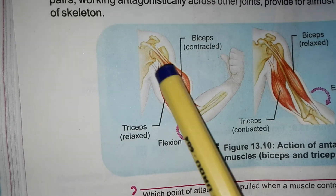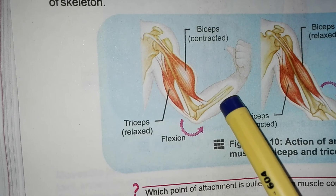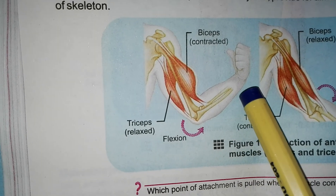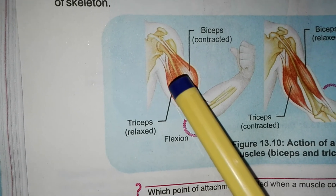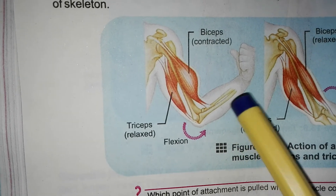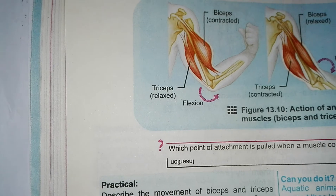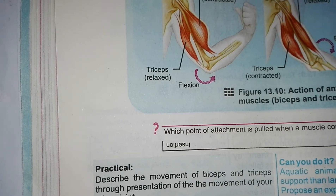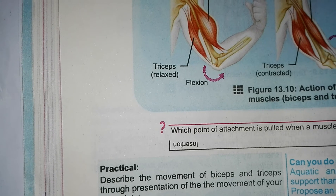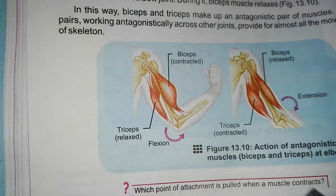When the nerve impulse comes and the muscle contracts, it pulls the moveable bone at the insertion point, producing movement. This phenomenon is called antagonism.